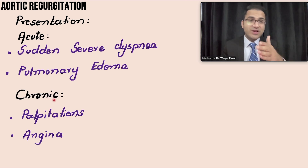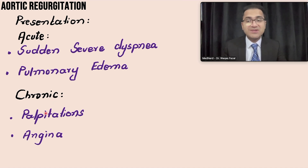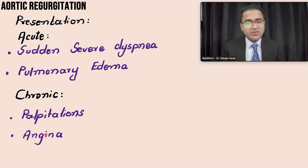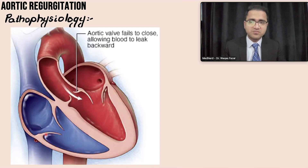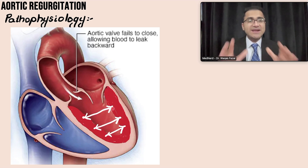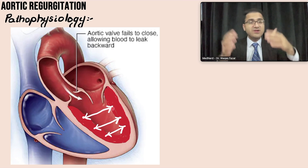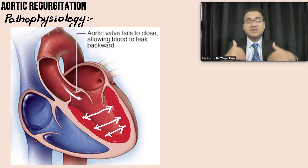In chronic aortic regurgitation, which builds up over a long period of time, the patient's common complaints are palpitations — feeling the heartbeat pounding constantly — and angina, or chest pain.